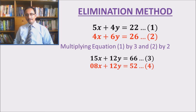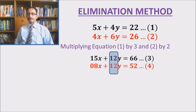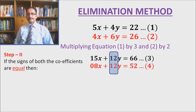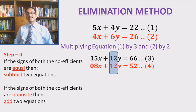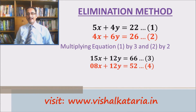In the pair of linear equations obtained after multiplying by 3 and 2 respectively, you will observe that the coefficients of y are now equal — both coefficients are equal to 12. Step number 2 is: if the signs of both the coefficients are the same, we subtract the two equations; whereas if the signs are opposite, we add the two equations. In this example the signs of both coefficients are the same — both are positive 12 — so we are going to subtract these two equations.